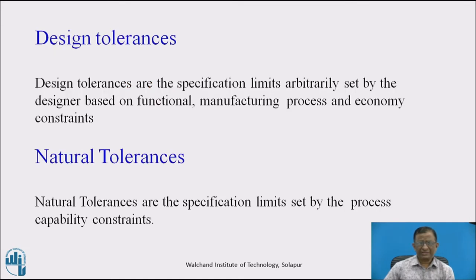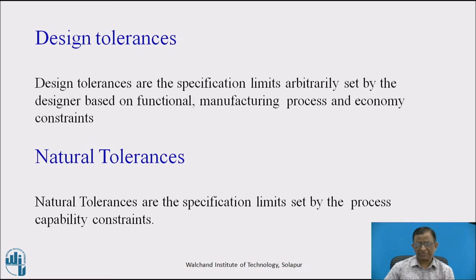Design tolerances are decided by the designer when he is designing the product for the intended functional requirement of the customers. He has to set certain limits of variability based upon the functional need of the product and the manufacturing process selected, considering economical constraints. It becomes a decision making under a combination of constraints such as functional requirement, manufacturing process capabilities, and economy of manufacturing — all of which decide what specific variations in the specified parameter are going to be accepted.